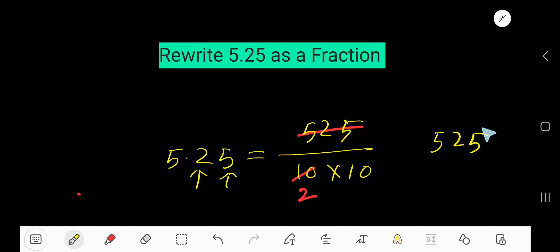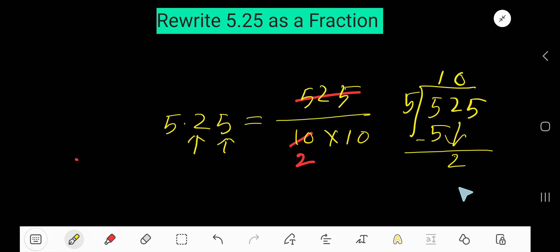525. 5 goes into 5, 1 times, 1 times 5 is 5. If you subtract, 0. Bring down this 0. Bring down this 2. 5 goes into 2 how many times? 0 times, since this is less than 5. 0 times 5 means 0. If you subtract, then 2. Bring down this 5.